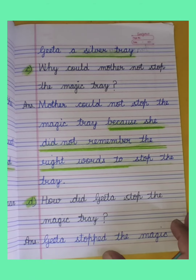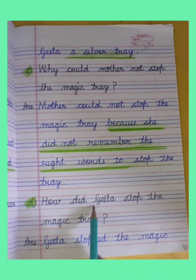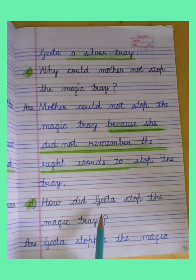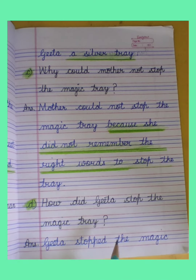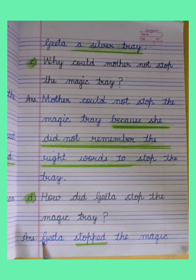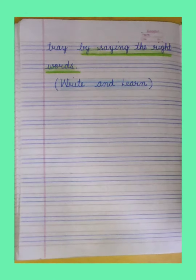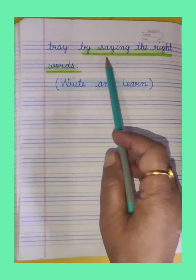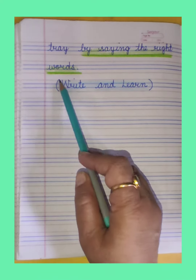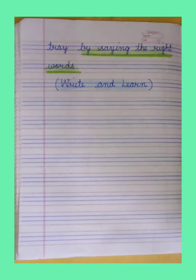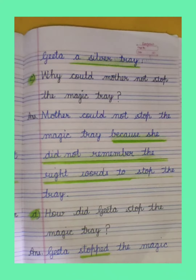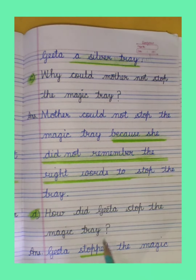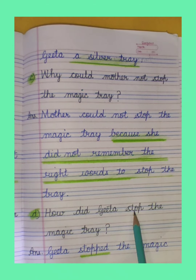Next question is Part D: How did Gita stop the magic tray? Answer: Gita stopped the magic tray by saying the right words. So 'stop' changes into 'stopped'. 'Stop' is present tense and 'stopped' is past tense.